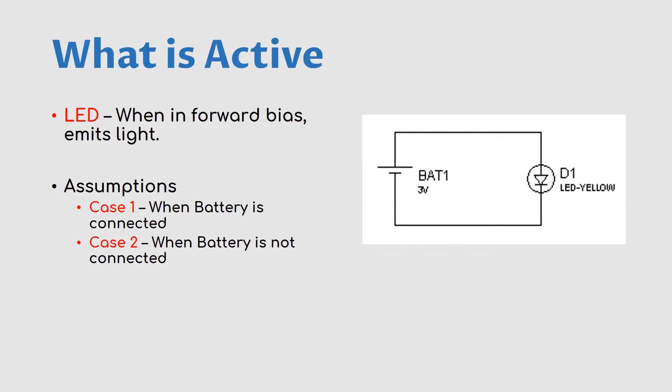Let me give an example. See this circuit — a battery is connected to an LED. The property of an LED is that when connected in forward bias, it emits light. In case one, when the battery is connected, the LED is glowing. This is the simple application.